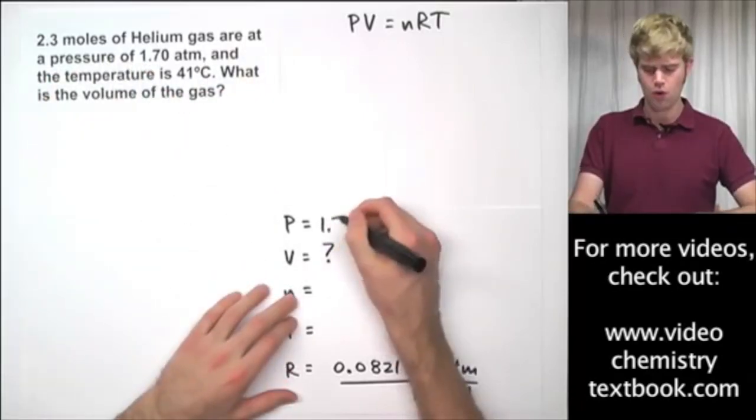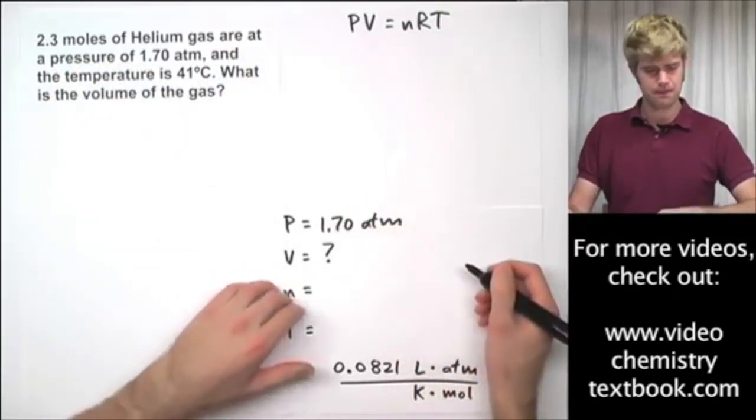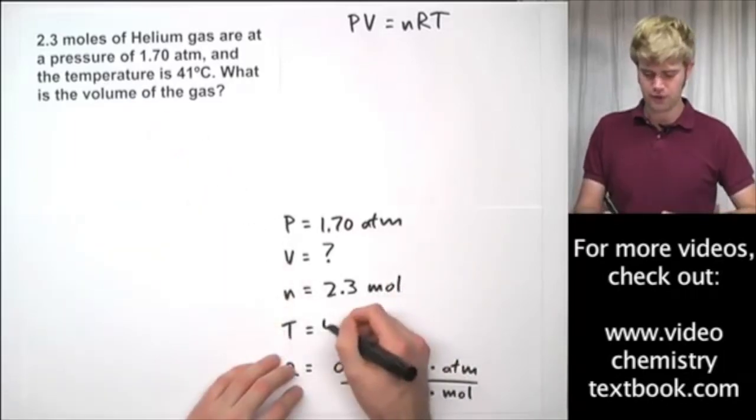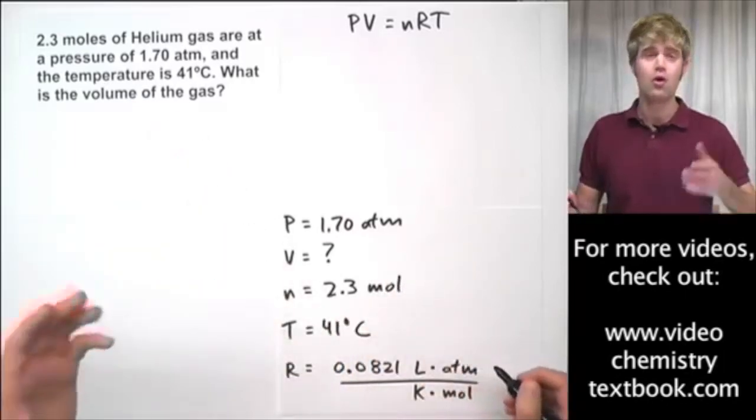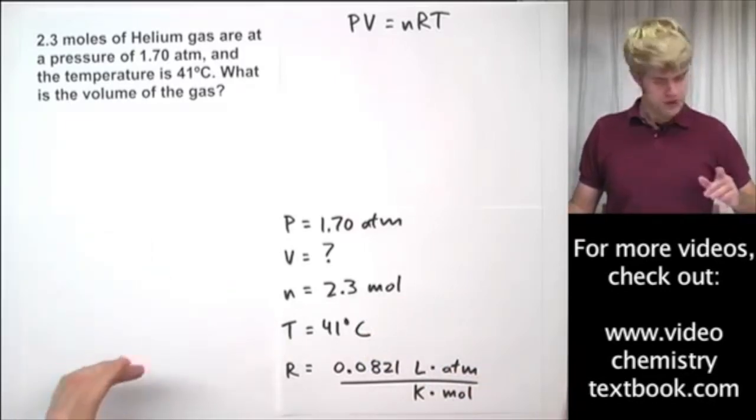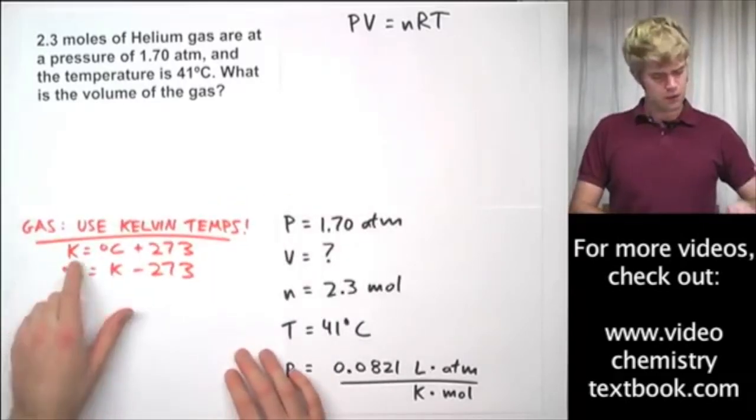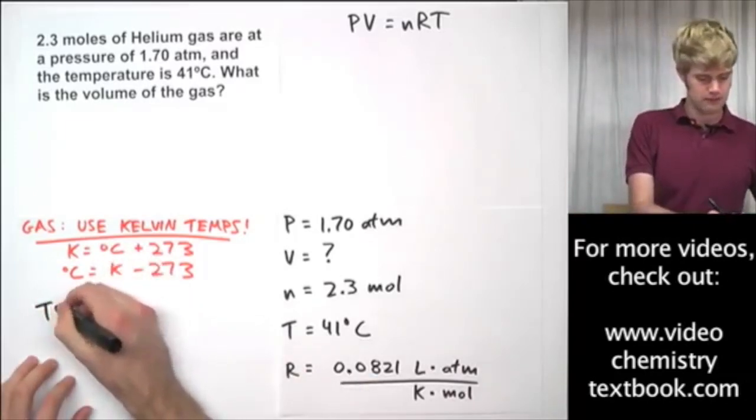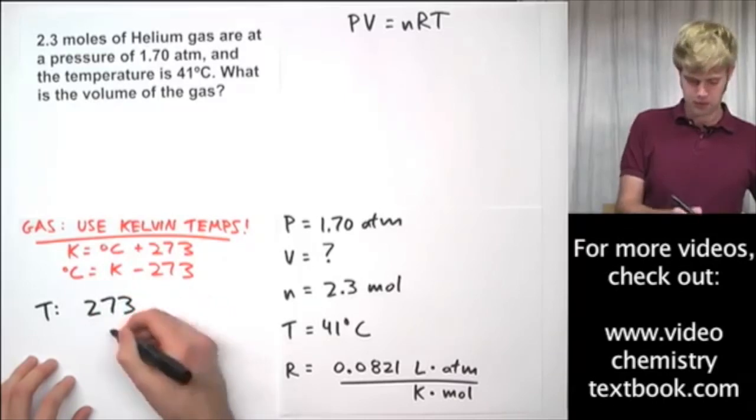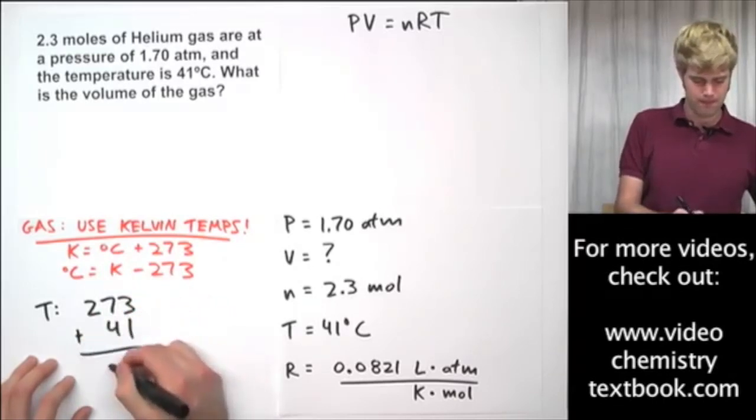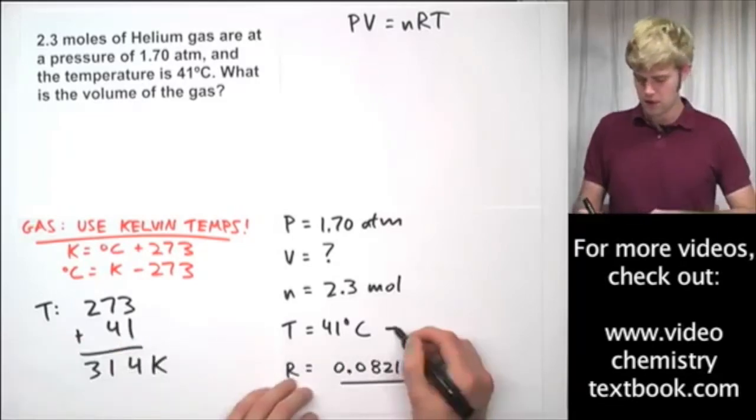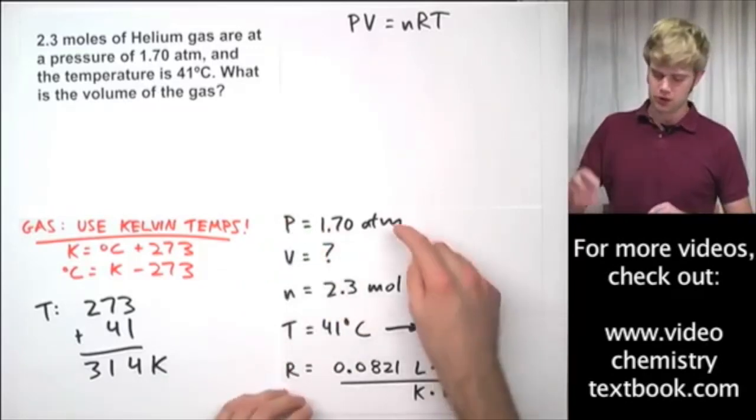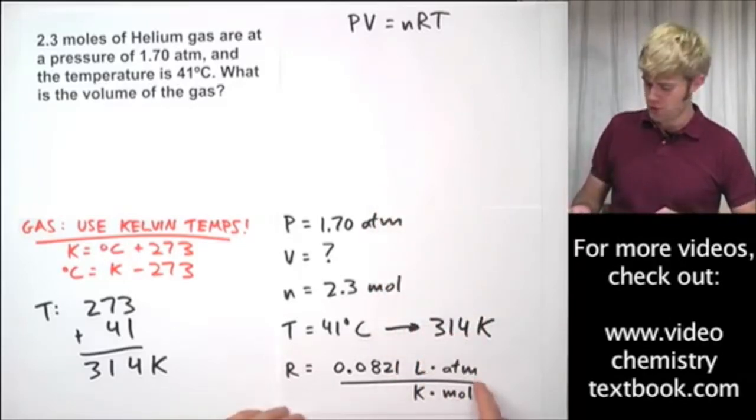All right, so we have a pressure of 1.70 atm. We have the amount of gas is 2.3 moles, and the temperature is 41 degrees Celsius, which you probably already know we're going to have to end up converting to Kelvin. Okay, so let's go ahead and do that right now. To get to Kelvin, we take our degrees Celsius, which here is 41, and we add 273 to that. So temperature will be 273 plus 41. So we're going to end up with 314 Kelvin.